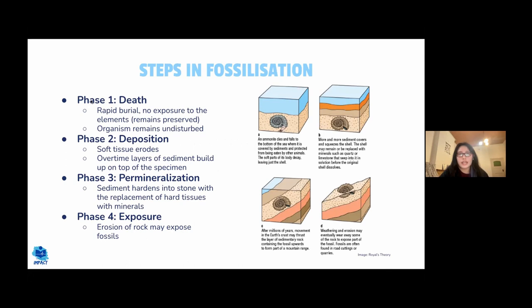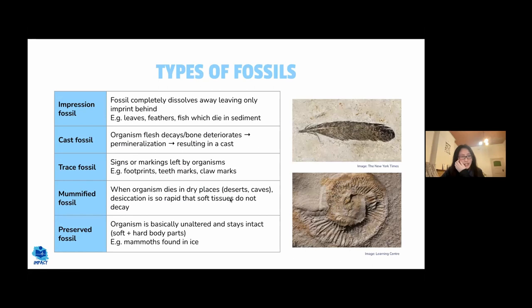The steps of fossilization: an organism (such as an ammonite) dies and is rapidly buried, protected from the elements. Layers of sediment build up over it; soft tissue erodes. Pressure from accumulating layers forms rock layers, and the hard tissue (like a shell) becomes replaced with minerals — a process called permineralization. Eventually the fossil may be exposed through weathering or erosion.